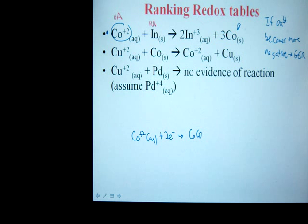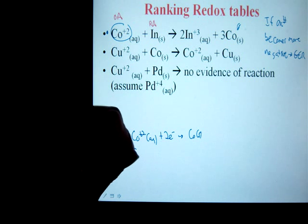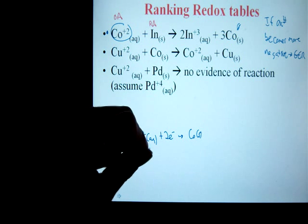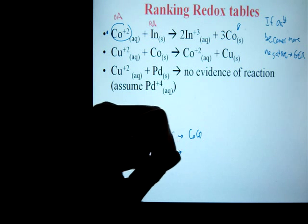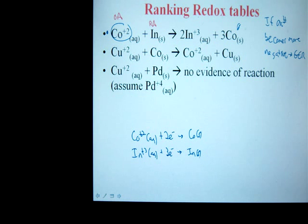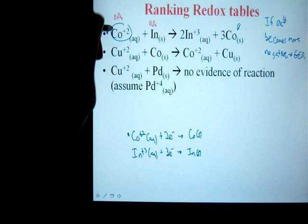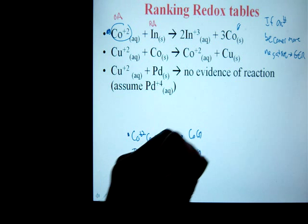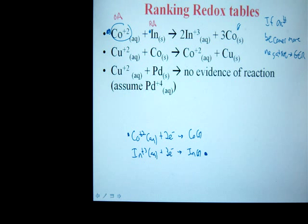The indium, we know it has to be below that. We've got indium three plus three electrons produces pure indium. Well, that makes sense. Cobalt half oxidizing agent, just like we have up here, is above the indium reducing agent, just like we have right there. Therefore, a spontaneous reaction. So that makes sense. So now we're done with reaction one.